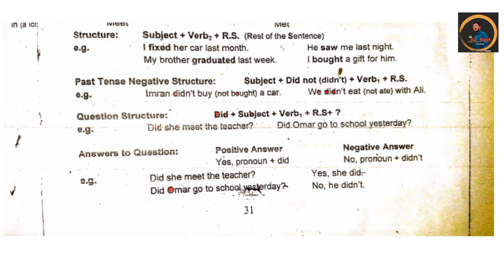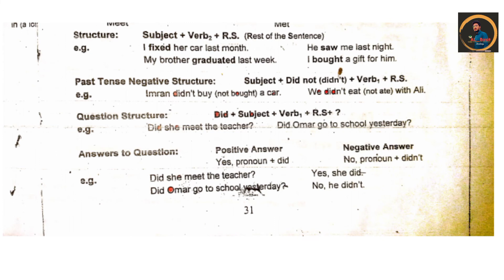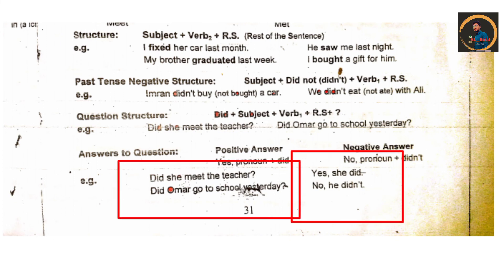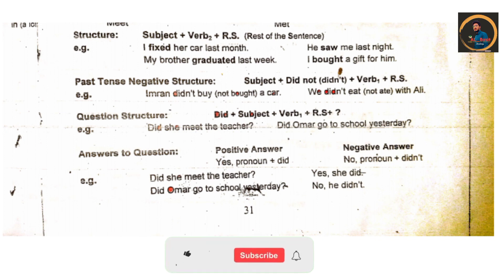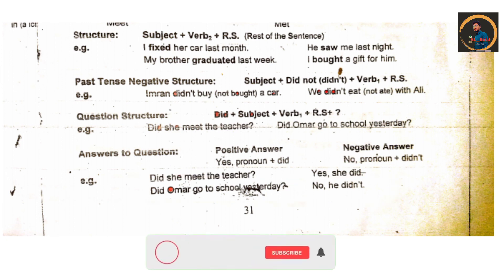Then we have answers to questions. We have a positive answer and a negative answer. For a positive answer we use: Yes, pronoun plus did. For example, 'Did she meet the teacher?' — positive answer: 'Yes, she did.' Negative answer: 'No, she didn't.' Second example: 'Did Omar go to school yesterday?' — negative answer: 'No, he didn't.' Positive answer: 'Yes, he did.'